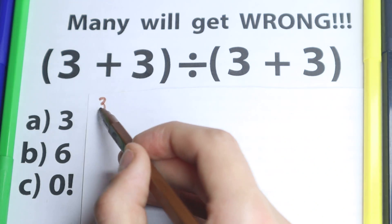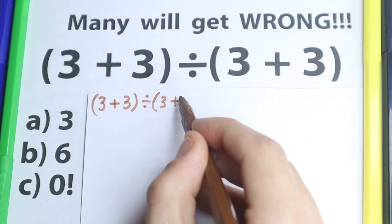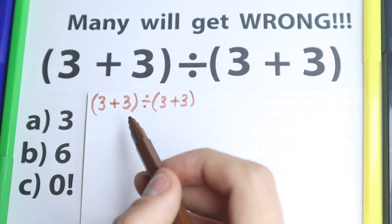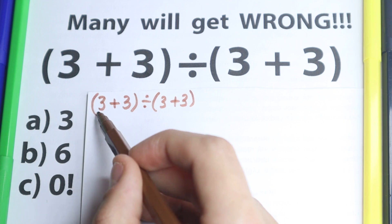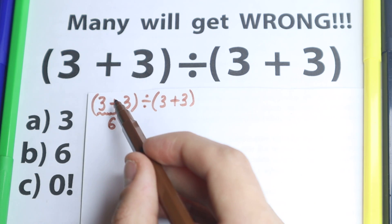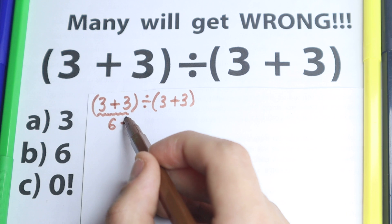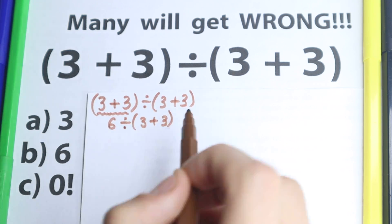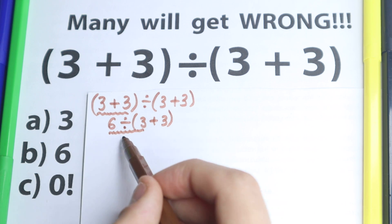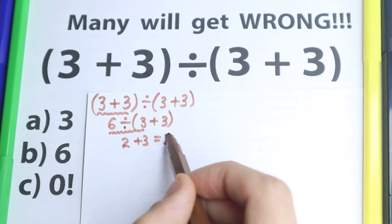Let me start with a first type of solution that many students use. We rewrite the problem: (3 plus 3) divided by (3 plus 3). One group of students goes from left to right — they start with the first parentheses: 3 plus 3 equals 6, giving 6 divided by 3 plus 3. Then they do the division first: 6 divided by 3 equals 2, and then 2 plus 3 equals 5.